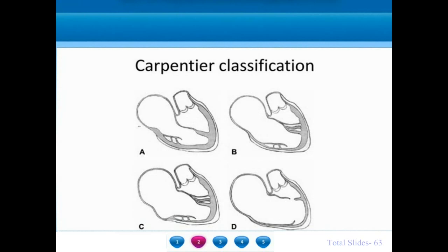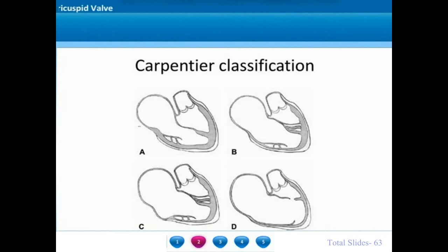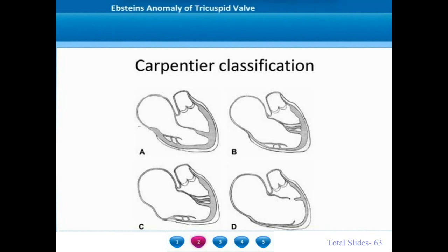For the purposes of surgical repair, Epstein's Anomaly is classified by Alan Carpentier into four types, A to D. In Carpentier type A, the atrialized right ventricle is very small, the displacement is minimal, and the anterior tricuspid leaflet has normal mobility. In Carpentier type B, the atrialized right ventricle is larger, the septal and posterior leaflet tethering is more, however the anterior leaflet retains good mobility.